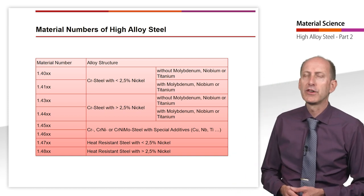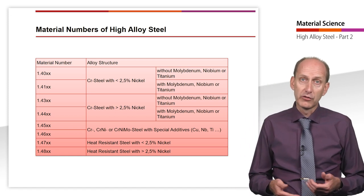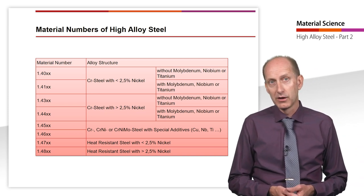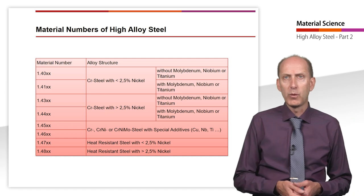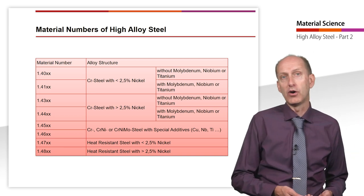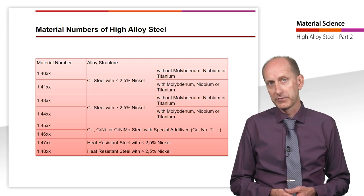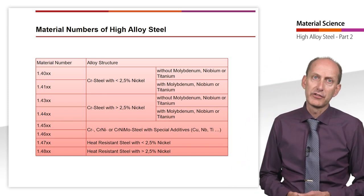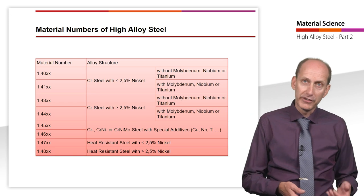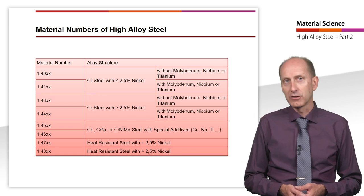This table lists the alloy structure according to the material group number. All steel with the group number 40 or 41 are high alloy steel with low nickel content. Compared with group 40, group 41 also contains molybdenum. The situation is similar for group 43 and 44, both of which have a nickel content of greater than 2.5%. The types with special additives such as stabilizers are found in group 45 and 46, and in groups 47 and 48 the heat-resistant high alloy steel without or with appreciable nickel content.